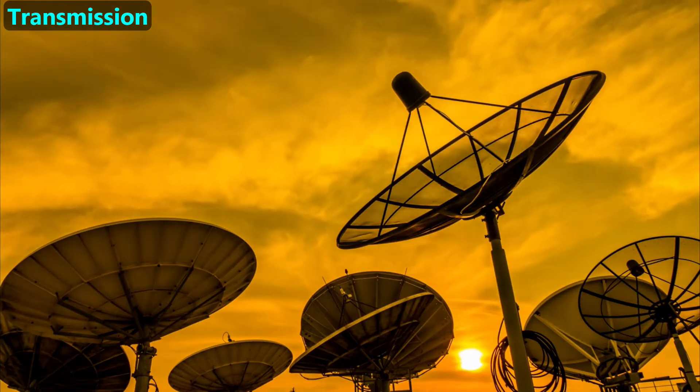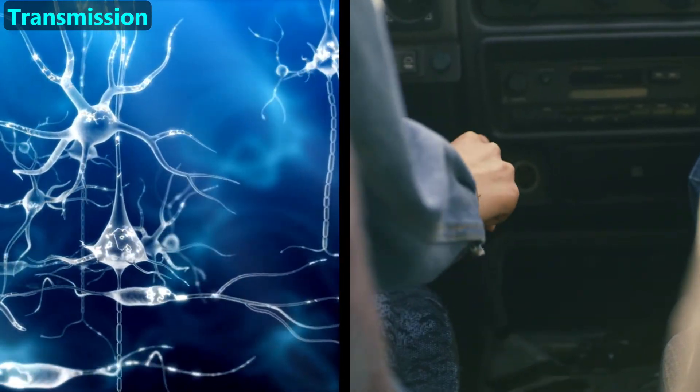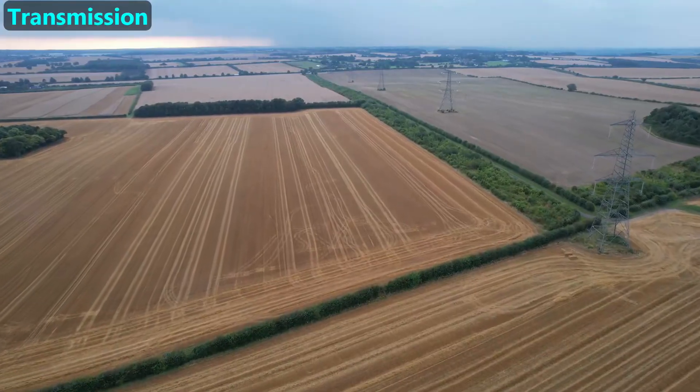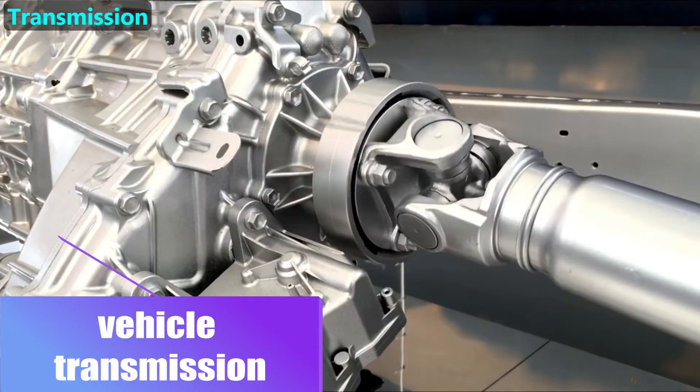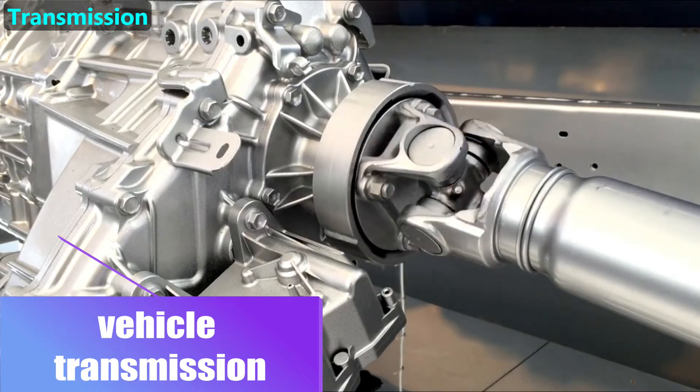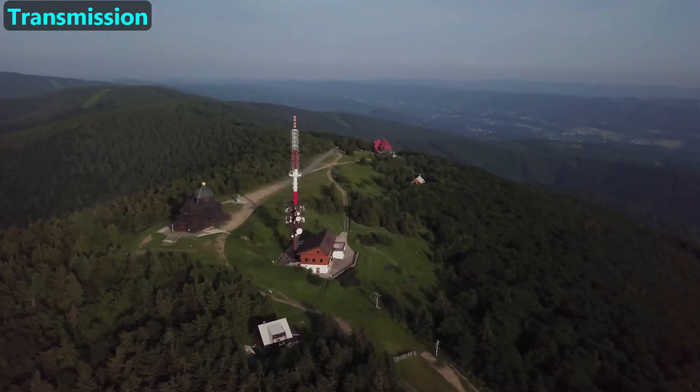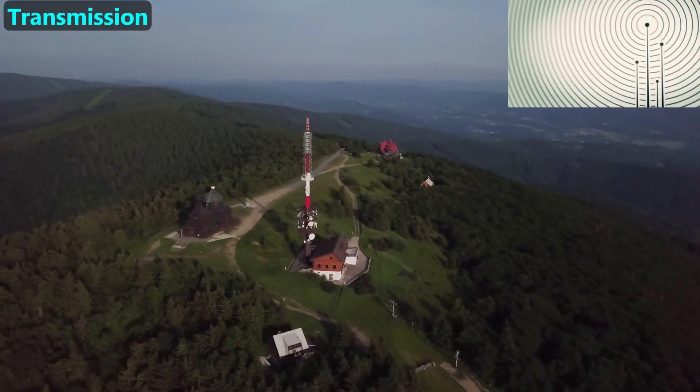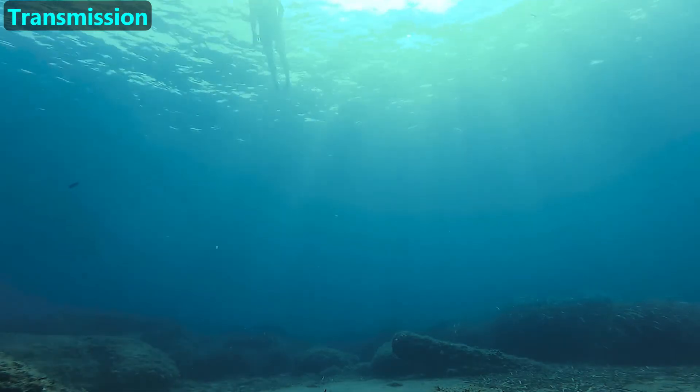Next, we'll discuss transmission. The word transmission is used in many areas of science and engineering. For example, these transmission lines carry electricity. This car's transmission transfers power from the engine to its wheels. But in the context of waves, the word transmission means a wave is traveling through something. All authors use the word transmission to refer to waves traveling through a physical medium, such as visible light waves traveling through this water.